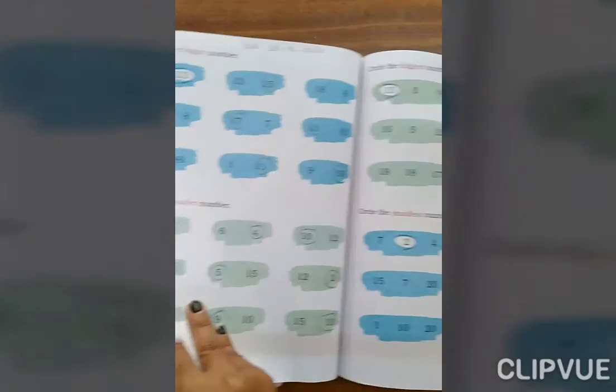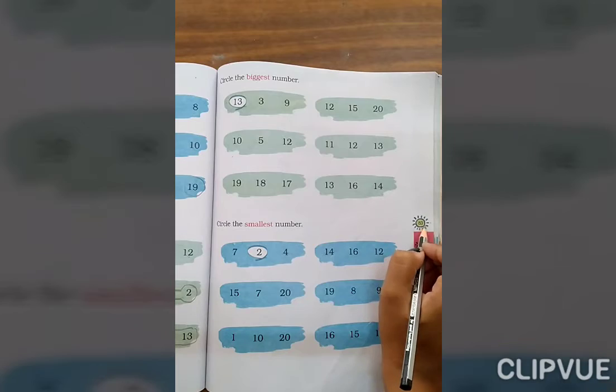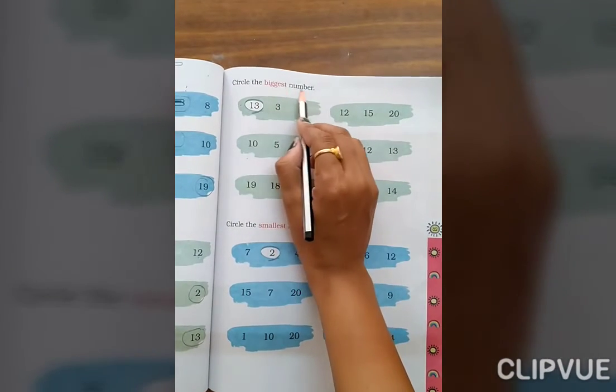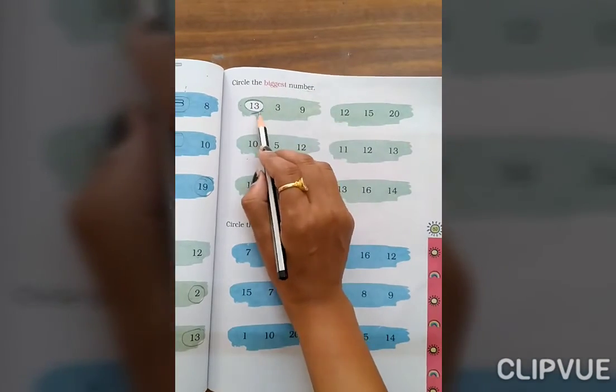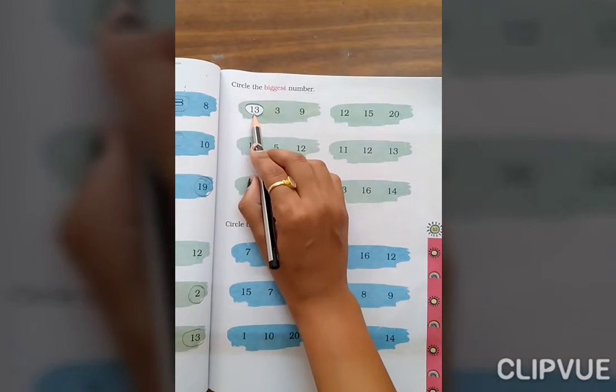Now, page number 83, page number 83. Circle the biggest number. 13, 3 and 9. इन तीनो में से biggest कौन सा है? 13.